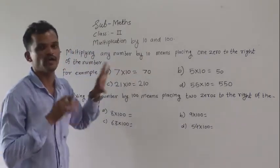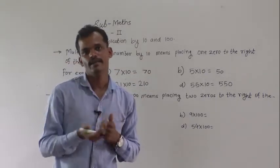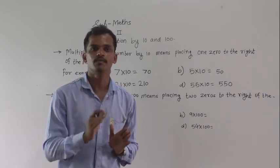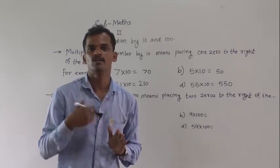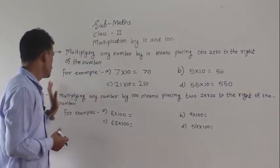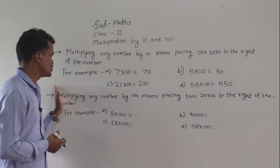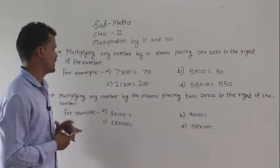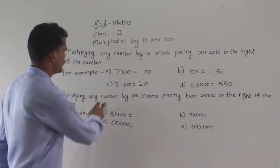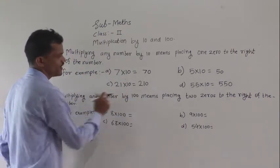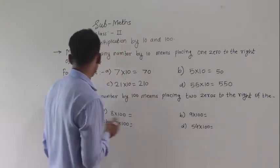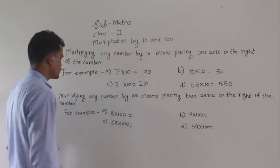Here we have seen multiplication by 10. Now we will see multiplication by 100. Multiplying any number by 100 means placing 2 zeros to the right of the number.